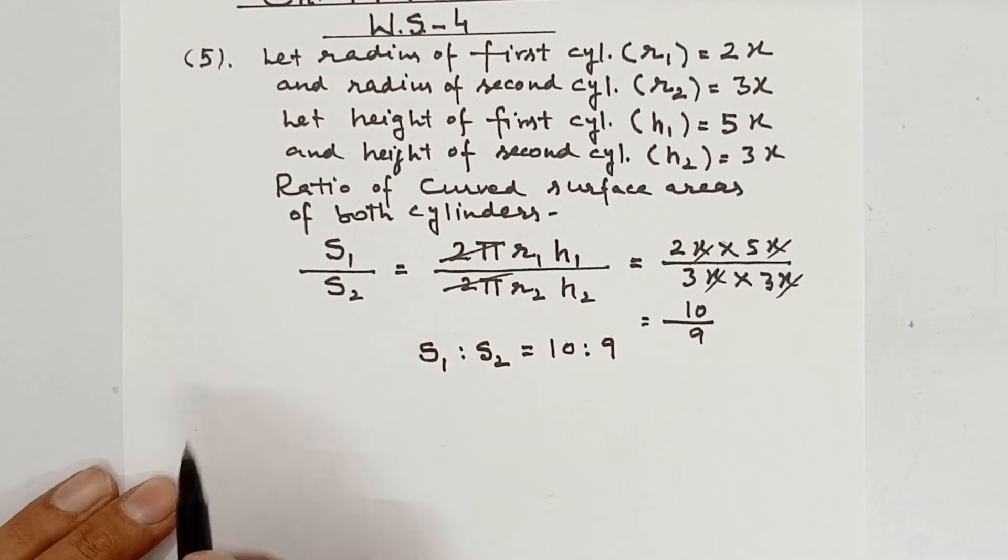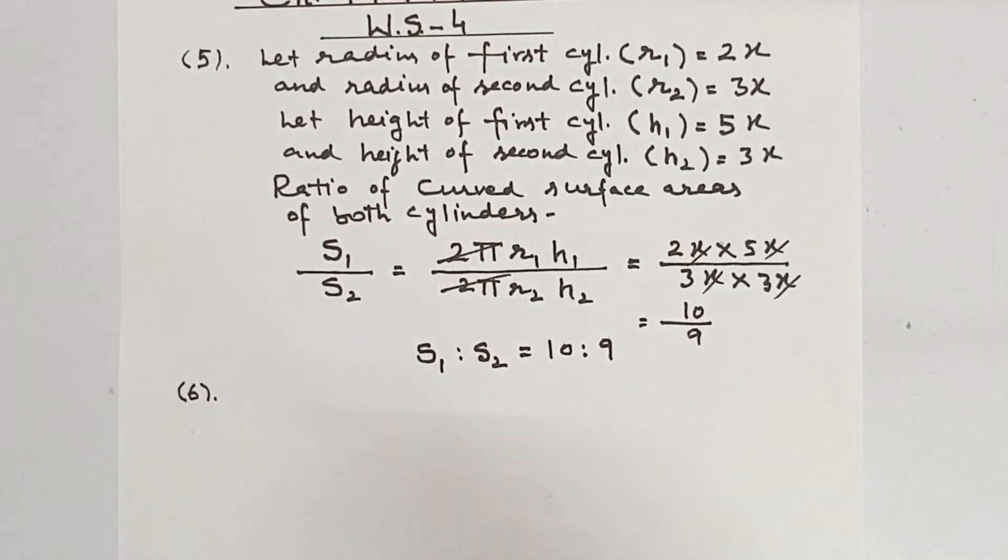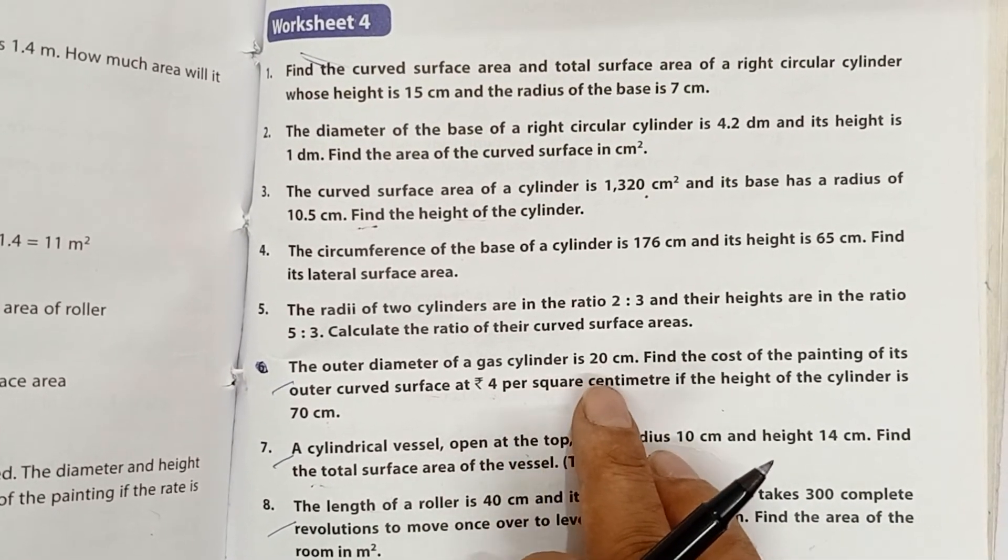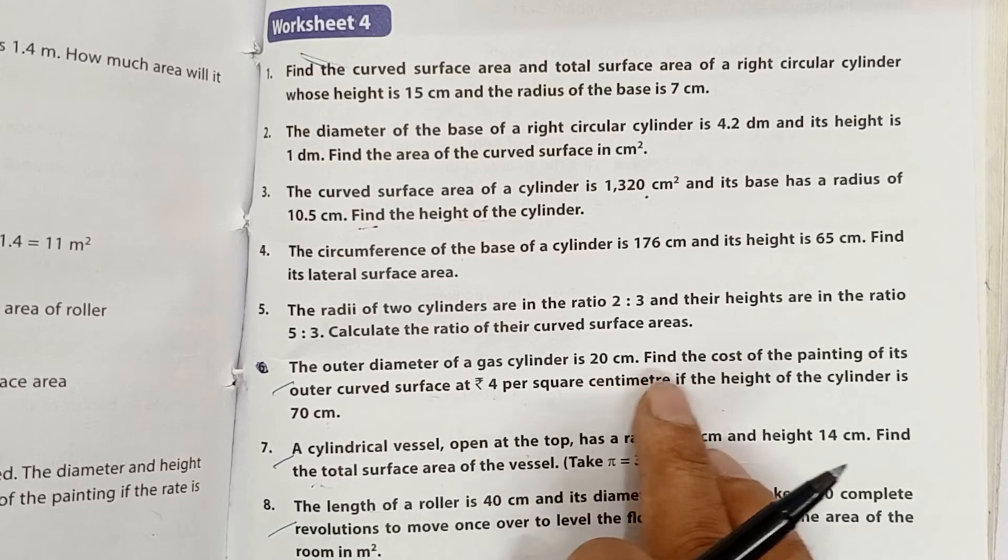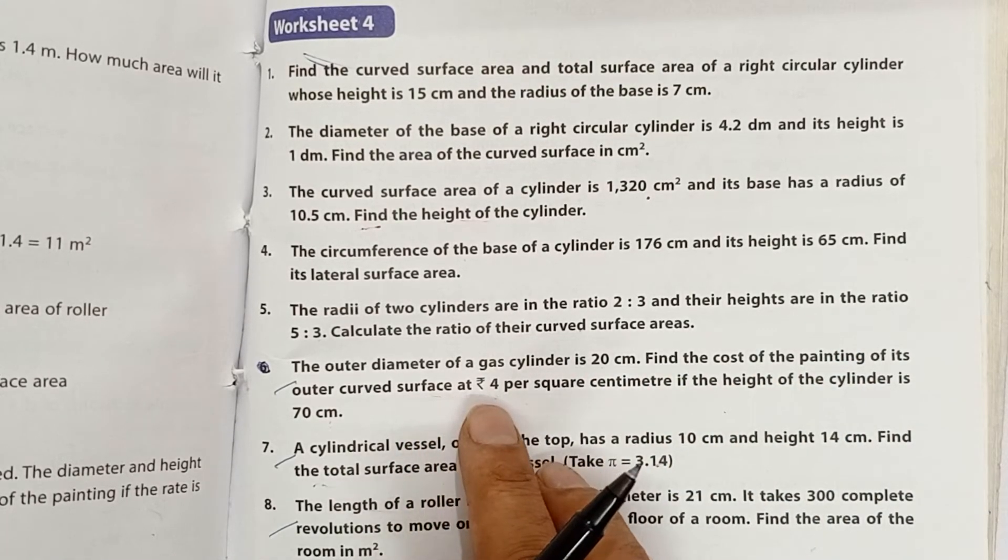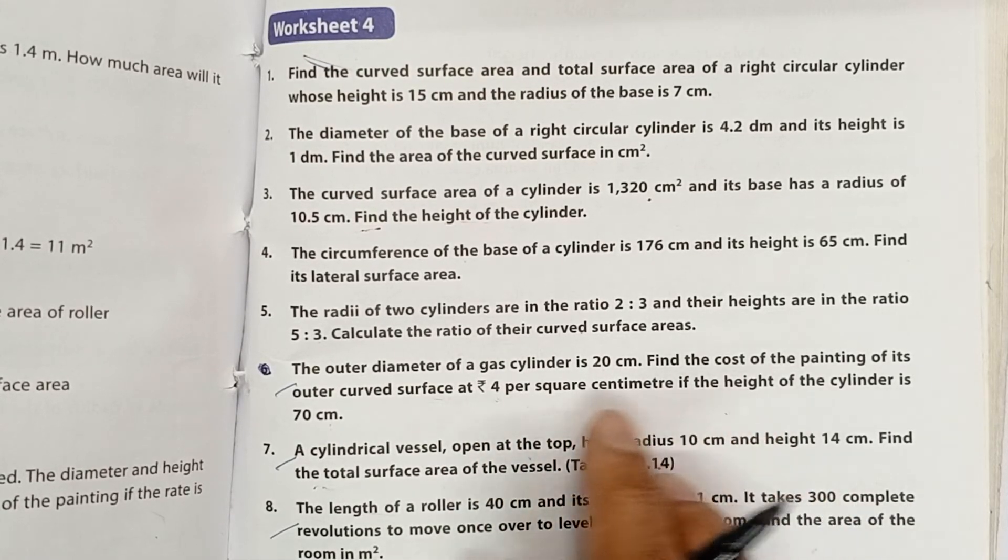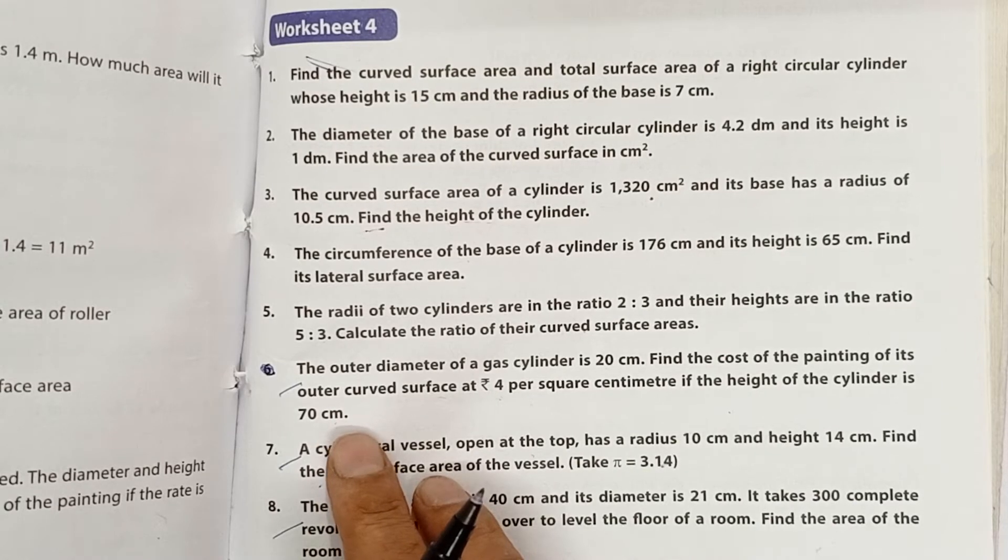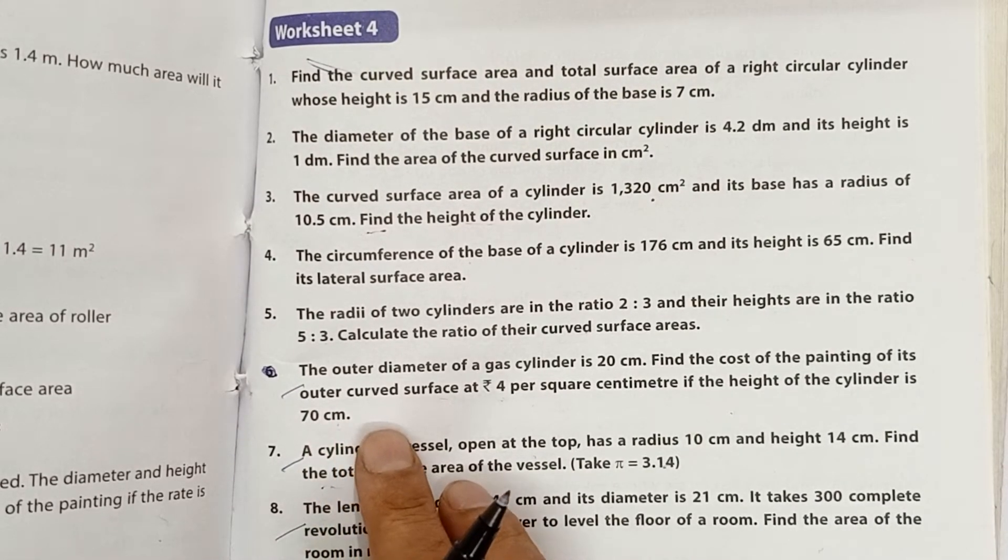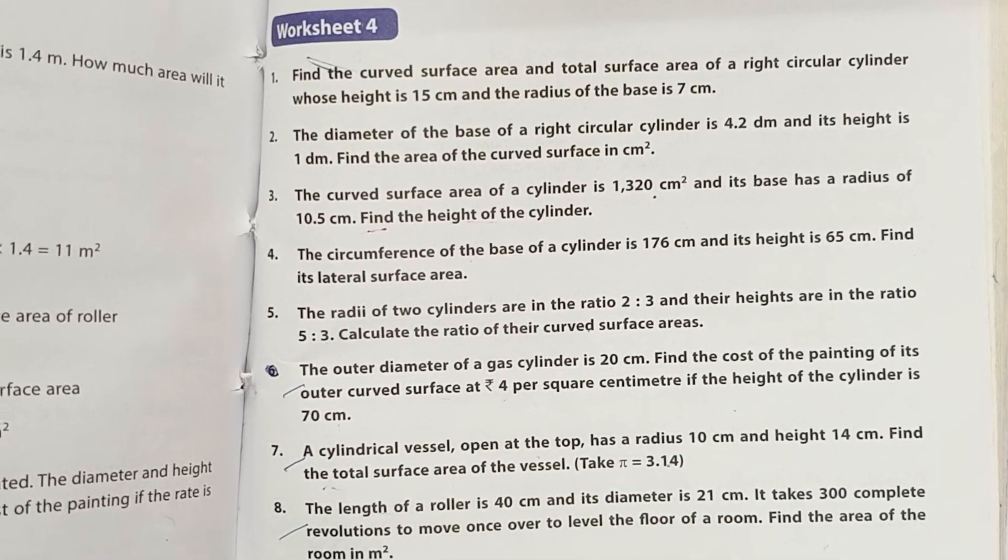Now let's do the solution of question 6. You can see here outer diameter of a gas cylinder is 20 cm. Find the cost of painting its outer curved surface at Rs 4 per square cm if height of the cylinder is 70 cm. You can observe everything here is given in cm.